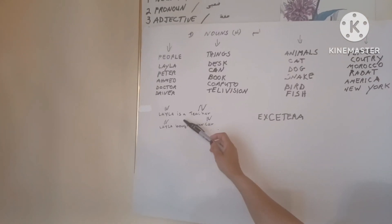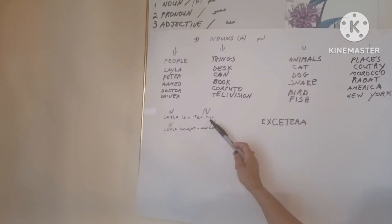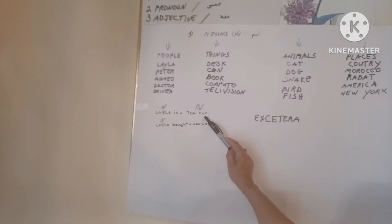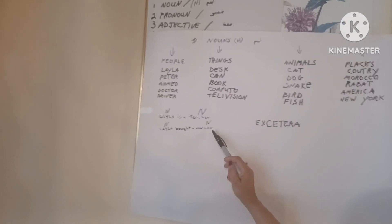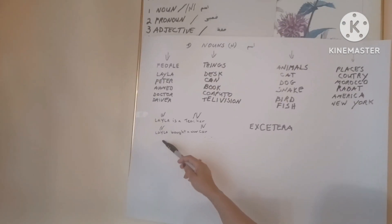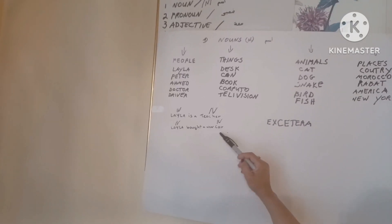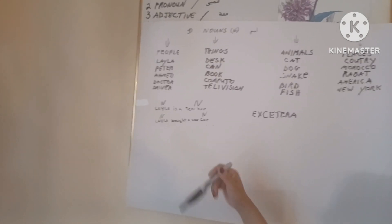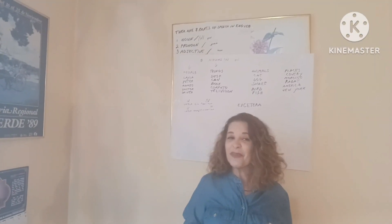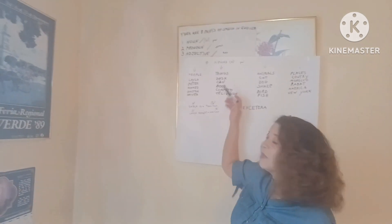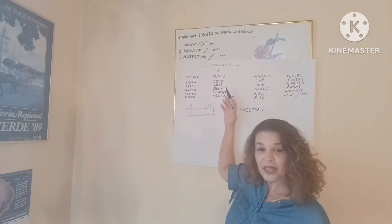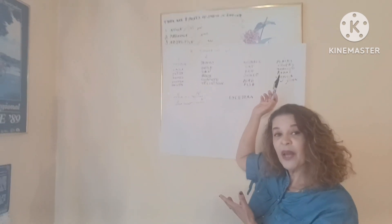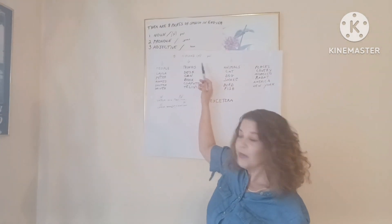I'm going to give you an example. Leila is a teacher. Leila is a noun, and teacher is a noun also. Leila bought a new car. Leila is a noun, and car is also a noun. This is the language of the name and the noun.